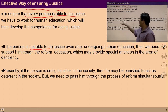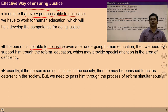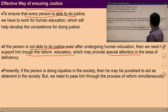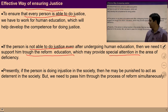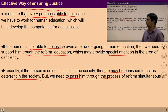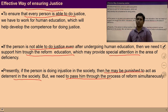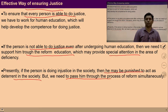If a person is not able to do justice even after undergoing this kind of education due to their own strengths and scars, there is a need to support them through reform education which provides special attention in areas of deficiency. Presently if a person is doing injustice, they may be punished to act as a deterrent. But we need to pass them through the process of reform simultaneously. Only punishment is not enough to ensure harmony in society — with punishment a process of reform is required.